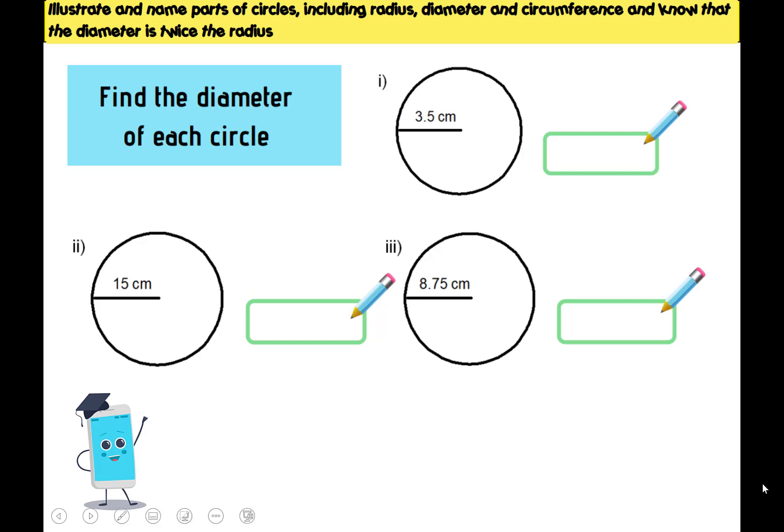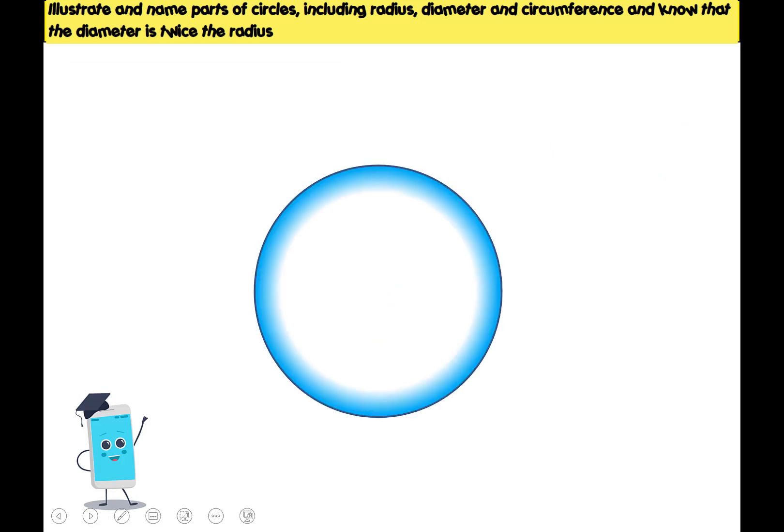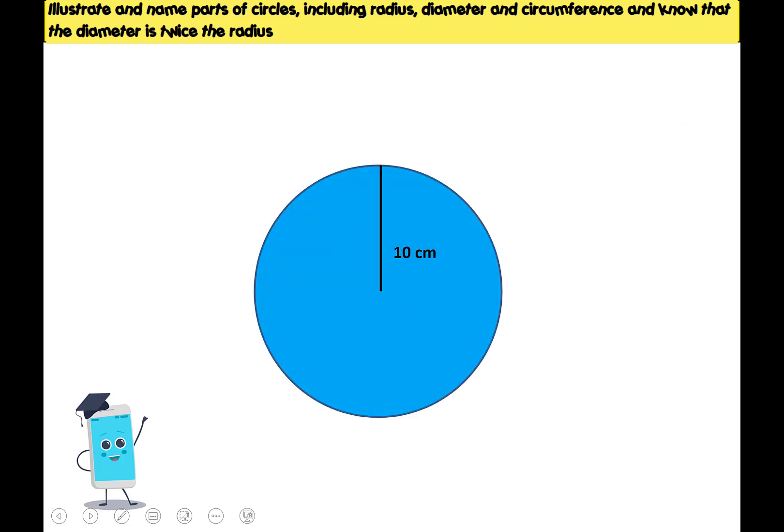We're going to start with a circle which has one part labelled. The first thing is to think about what clue do we have? What part of the circle have we got labelled? You can notice that it runs from the centre to the edge. It does not cut the circle completely in half. It doesn't run from one edge to the other. So we have the radius. So we could write down that the radius is 10 centimetres. It's always important when you're looking at any kind of problem that you think about what you do know. What clues do you have? In this instance, we only have one clue, but we know that it's the radius and that it's 10 centimetres.